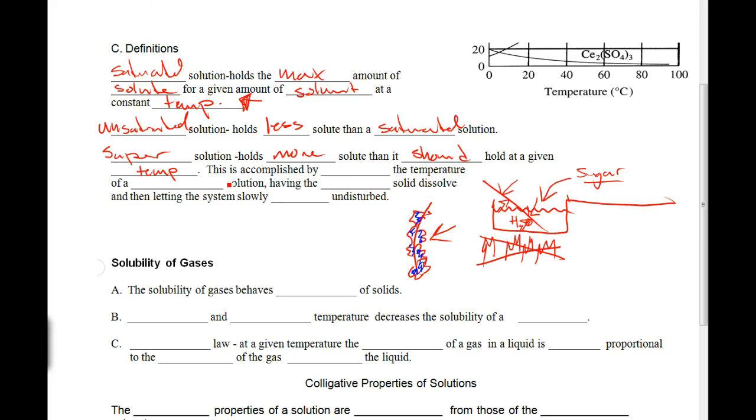We said all that stuff, we just never wrote it. So here we go. To accomplish a supersaturated solution, it's accomplished by increasing the temperature of a saturated solution, having the excess solid dissolve, and then letting the system slowly cool on the street. So that's how we cause a supersaturated solution.